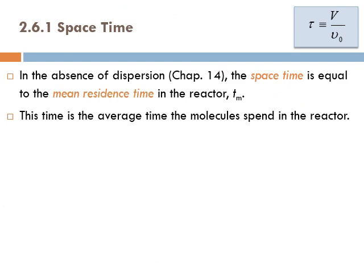In the absence of dispersion — we'll discuss dispersion in chapter 4 in the elective course — the space-time equals the mean residence time in the reactor. The mean residence time is the average time the molecules spend in the reactor.